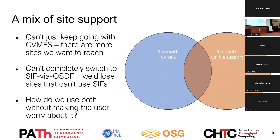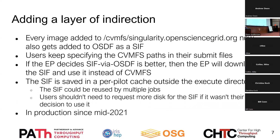So how do we handle this while being transparent to the user? The computer science way of doing it is to add a layer of indirection. We still have the cron job that converts a Docker registry image to a Singularity sandbox, but now it also converts to a SIF file and adds it to the OSDF. The user keeps specifying the CVMFS path in their Singularity image attribute, but once their job lands on an EP where getting the SIF file via OSDF is better, the EP will download the SIF and use it instead of CVMFS. The EP also has a cache — one cache per EP — where it keeps the downloaded SIF files, so the same SIF doesn't need to get downloaded for multiple jobs on the same EP, and to not charge the user for disk space they didn't know they needed. This has been in production since mid-2021.